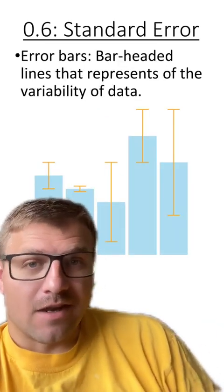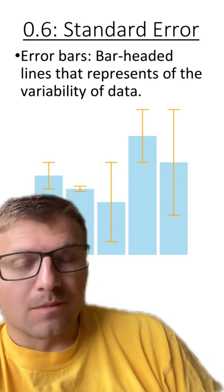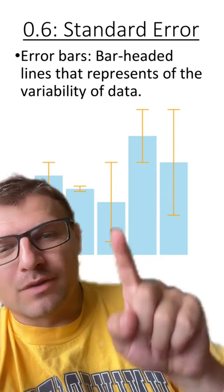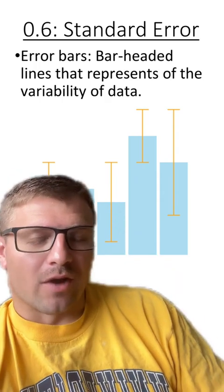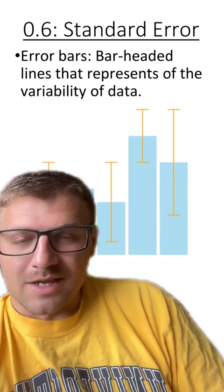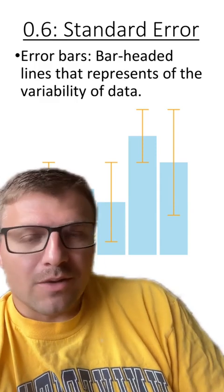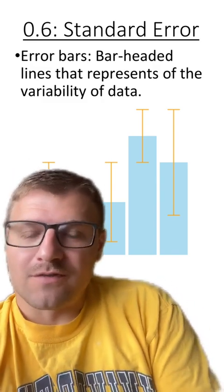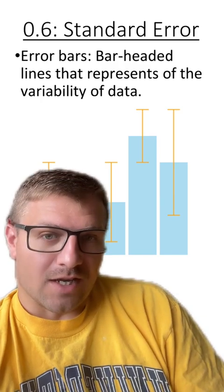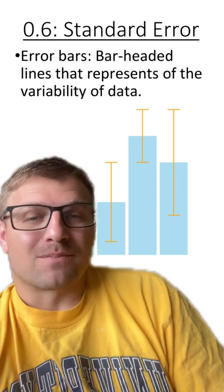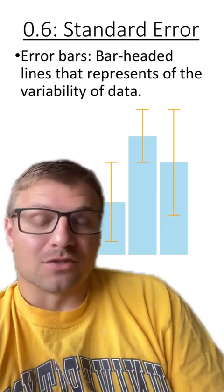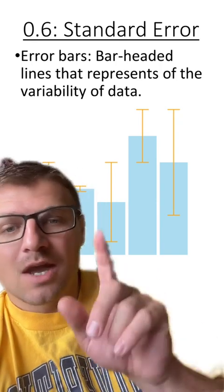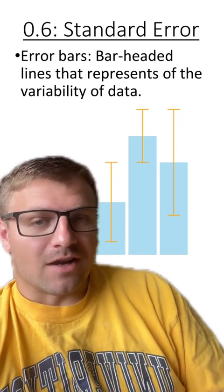After we calculate standard error of the mean, we use something called error bars to represent this value. These are called error bars, and they go above and below where the average sits for a bar graph. And these error bars or bar-headed lines represent the variability or the variation in the data. Remember how before we talked about within group variation and between group variation? These error bars are going to help us represent that within and between group variation. This is why we talked about variation and standard deviation before we got to these things called standard error bars.